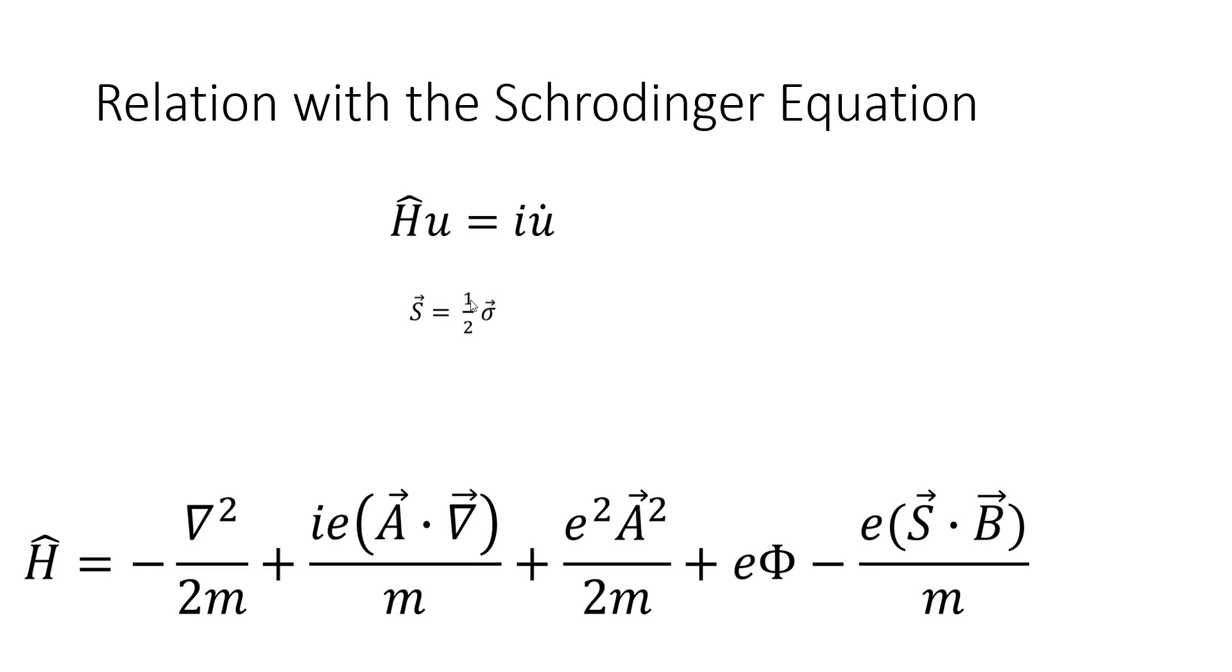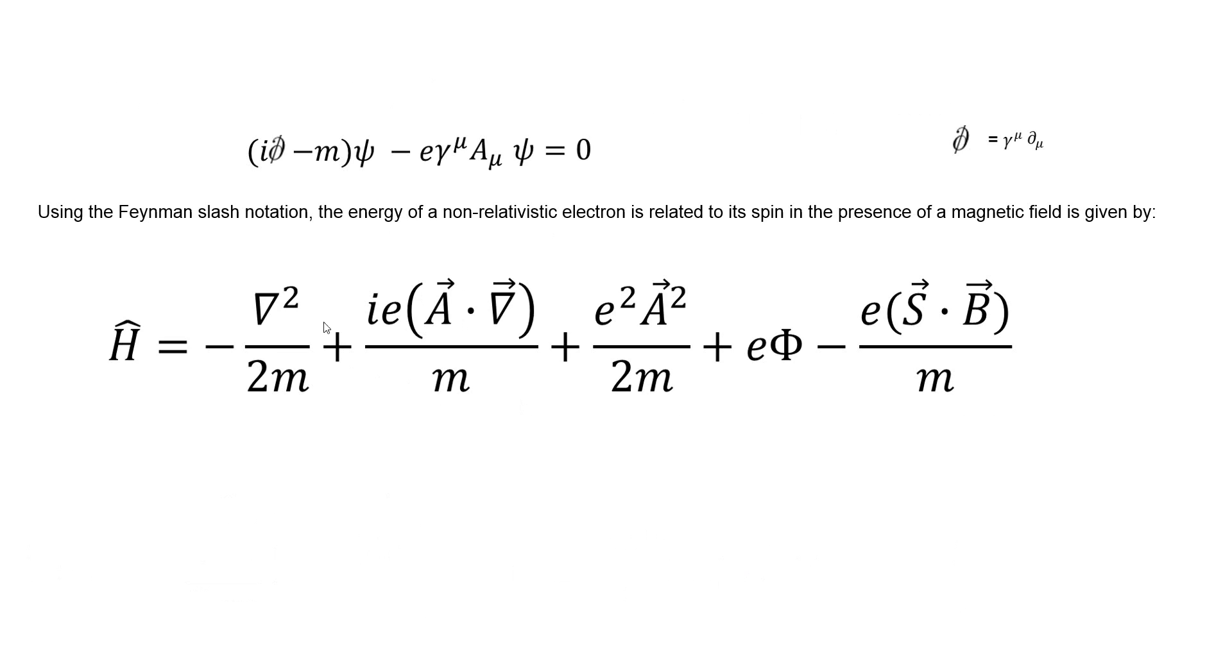I'll define the spin matrix s to be one-half sigma. Usually it would be h bar over two, but since I'm using h bar over two times sigma vector, but since I'm using natural units, h bar equals one. Now the Hamiltonian of this interaction becomes this. It's the usual kinetic energy plus e phi if we're not considering the Dirac equation, if we're just considering the regular Schrodinger equation. But we have some extra terms, however. This is the Hamiltonian of this interaction.